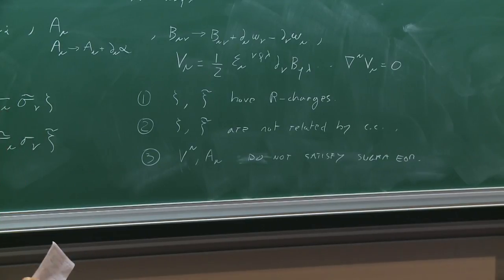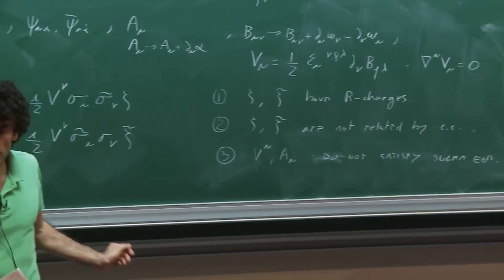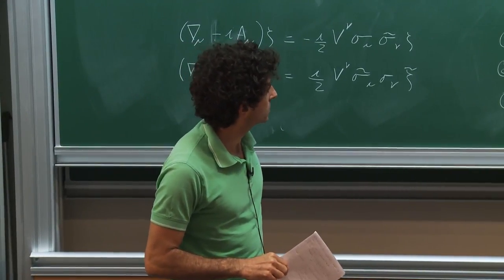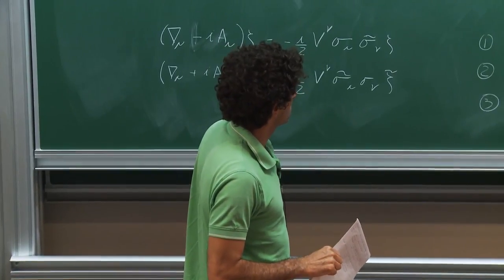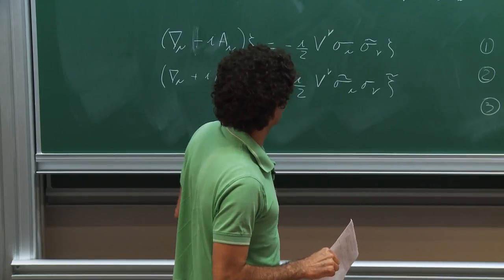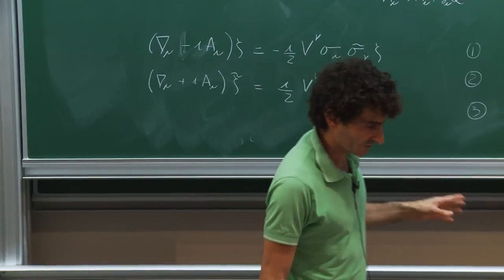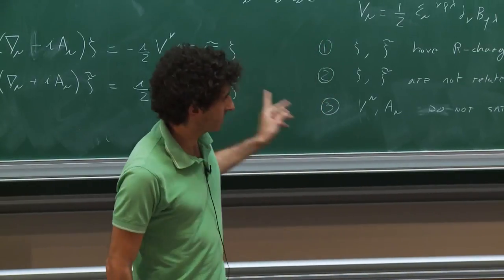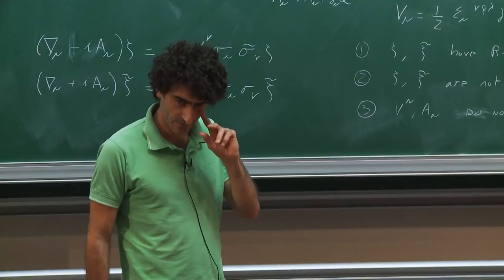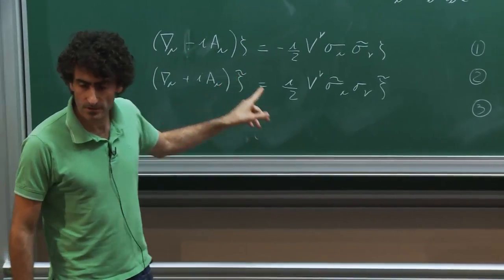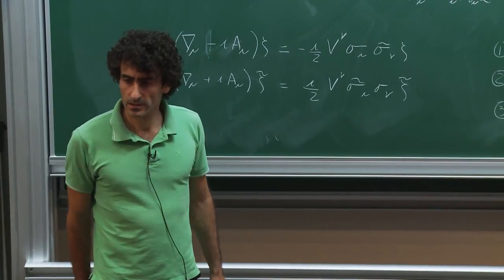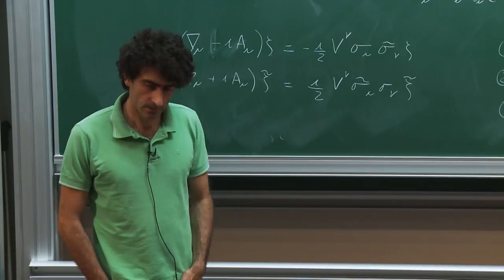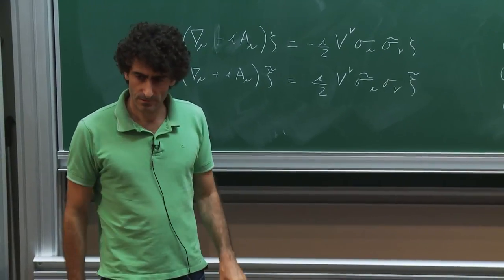A question about whether the theory also breaks reflection positivity: that depends on the specific background. The round sphere cannot be in this class of backgrounds — there will be no round sphere solution to these equations. If the manifold is not spin but only spin-c, then you have to choose a twisted bundle where the R-charges load appropriately, and the spinor zeta lives in an honest bundle.